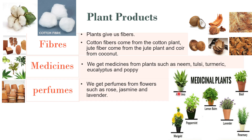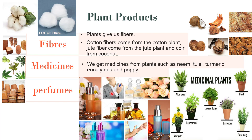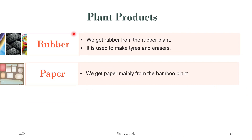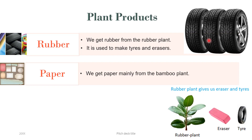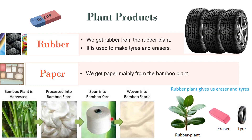We also get medicines from plants like aloe vera, peppermint, marigold, lemon, lavender and rosemary — these are all medicinal plants. We get perfume from flowers such as rose, jasmine and lavender. We get rubber from the rubber plant, which is used to make tires and erasers. We get paper mainly from bamboo plant.